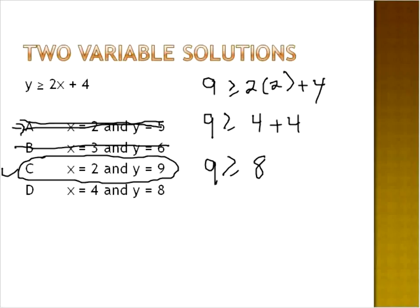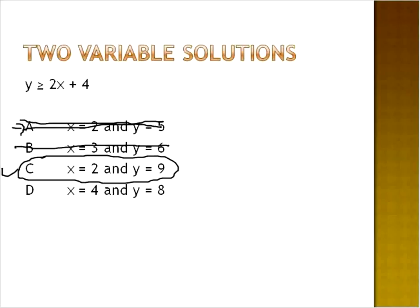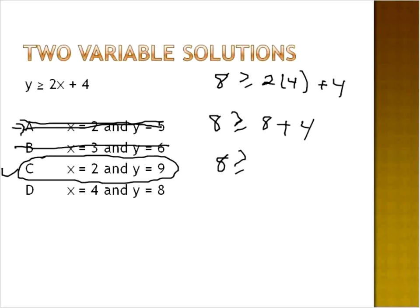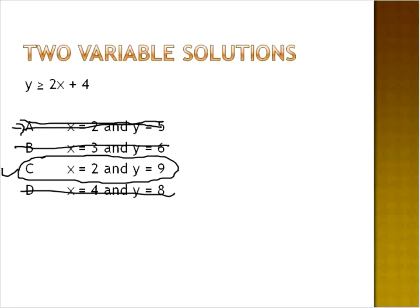If we'd like to check the other answers, we can. Let's look at option D: eight is greater than or equal to two times four plus four — eight is greater than or equal to eight plus four. Eight is not greater than twelve — eight is definitely less than twelve. So we can solve each of them and find the correct answer, and that's what we do with two-variable solutions.